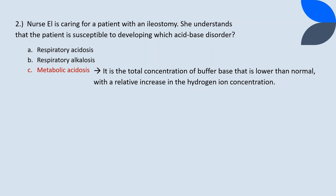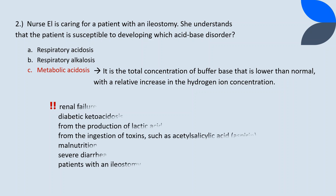Question 2. It is the total concentration of buffer bases that is lower than normal, with a relative increase in the hydrogen ion concentration. This results from loss of buffer bases or retention of too many acids without sufficient bases, and occurs in conditions such as renal failure, diabetic ketoacidosis, from the production of lactic acid, from the ingestion of toxins such as acetylsalicylic acid or aspirin, malnutrition, severe diarrhea, and patients with an ileostomy.